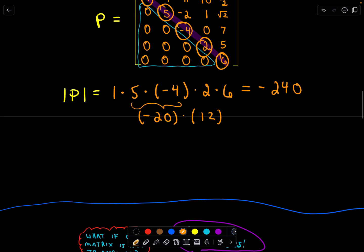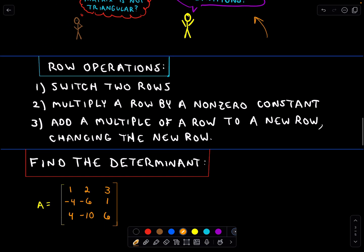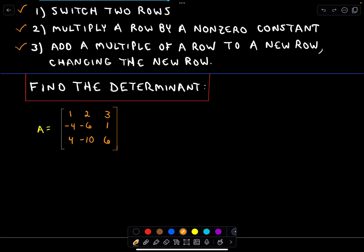So you may be thinking: what if our matrix is not triangular, what if it's not in this nice form? Well, in that case we can simply use row operations to put it into a better form. To remind you about row operations: we can switch two rows — that won't change the determinant. We can multiply any row by a non-zero constant — that won't change the determinant. And we can also add a multiple of a row to another row. So let's find the determinant of this matrix A. We're going to put it into upper triangular form.